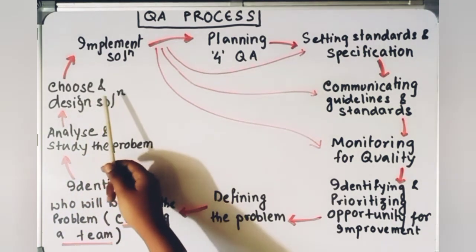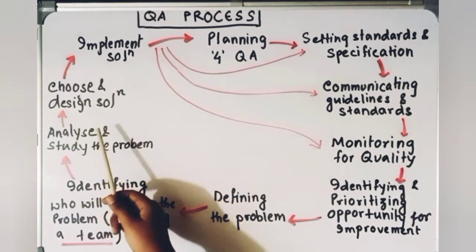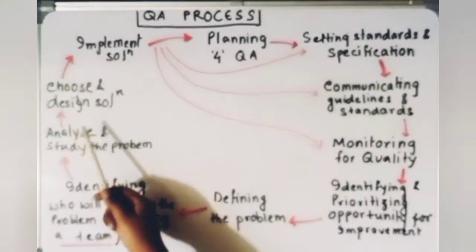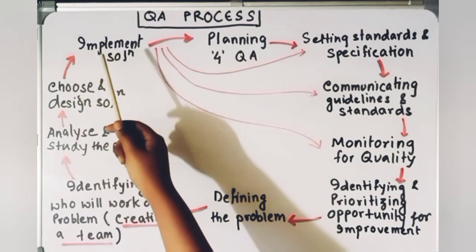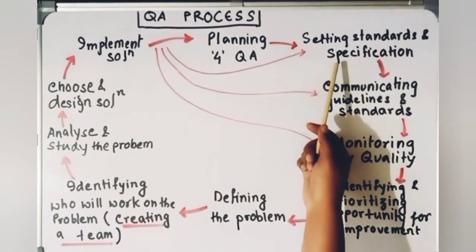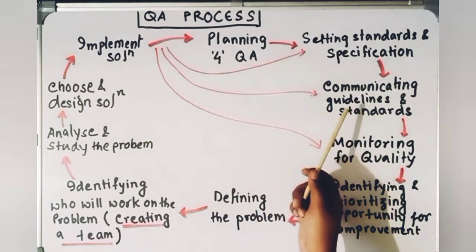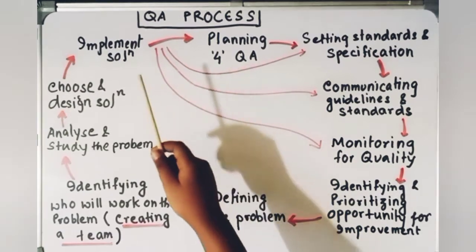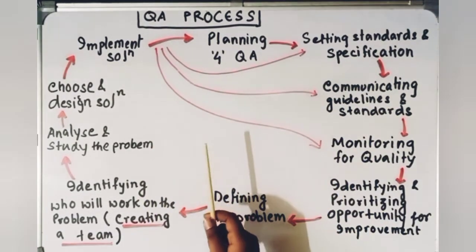Then you will choose or design solutions. You will have various options so that if one doesn't work, you can choose another. After implementing a solution, you will again review the standards and specifications, check the quality of the product, review community guidelines, and if it meets the standard you keep it; otherwise the cycle continues. This is the process of quality assurance.